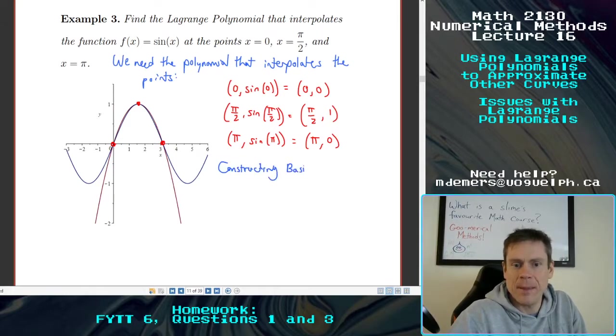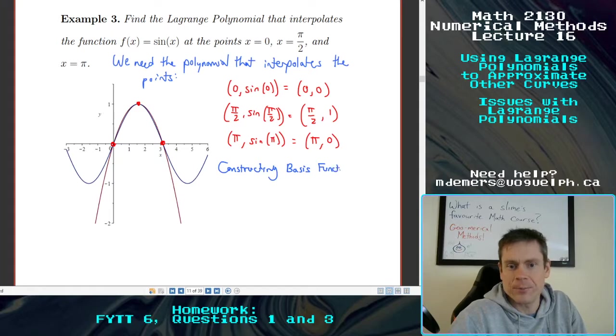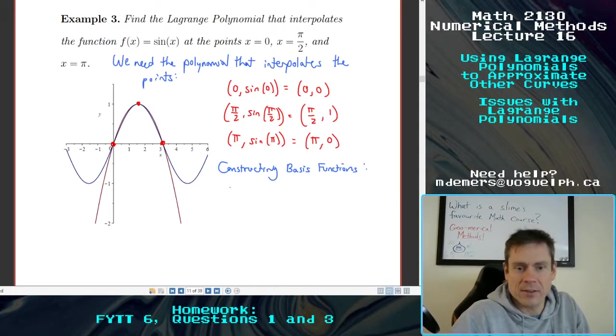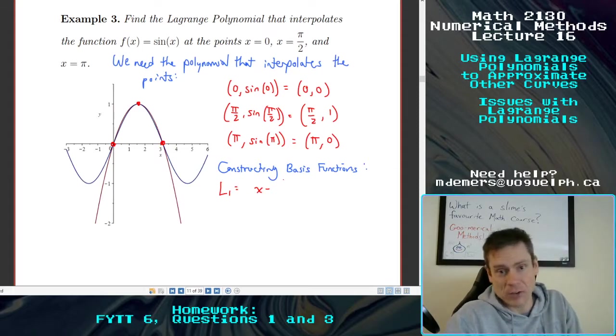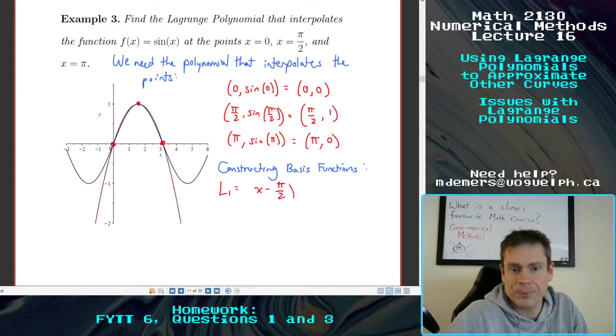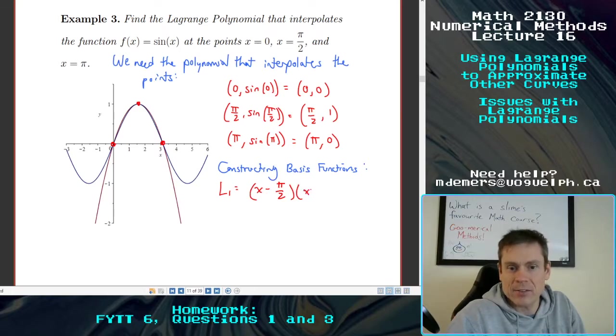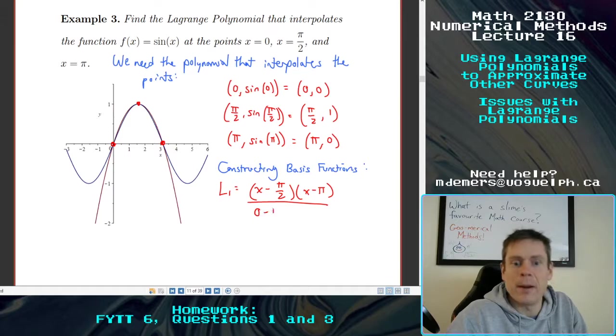Constructing basis functions. Our L1 is going to equal (x - pi/2)(x - pi) over (0 - pi/2)(0 - pi).